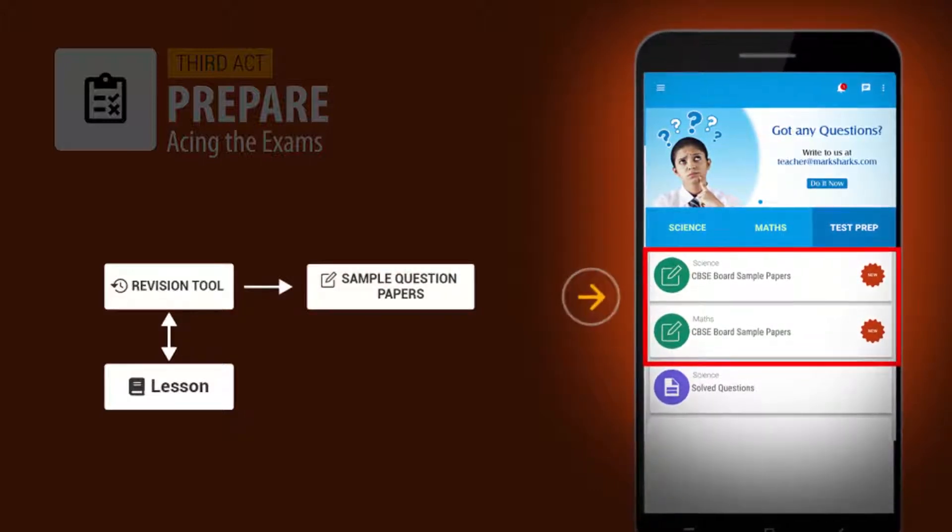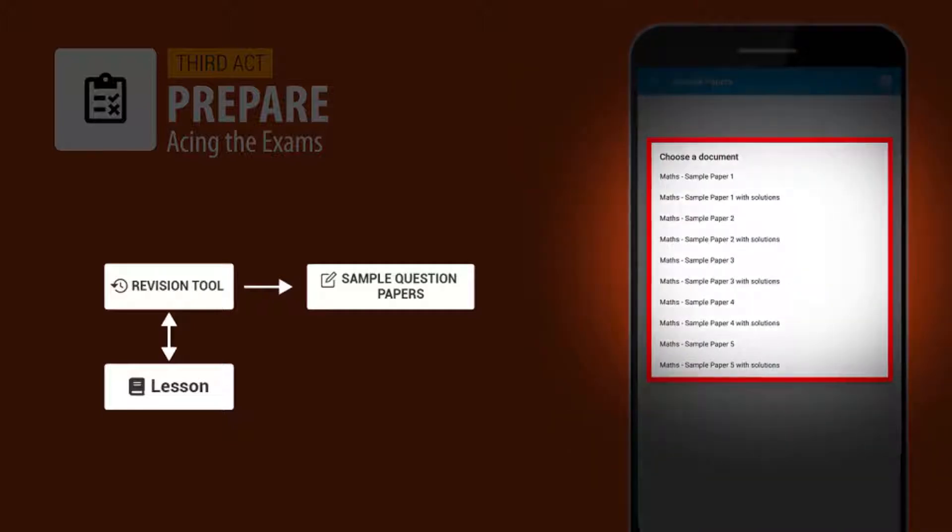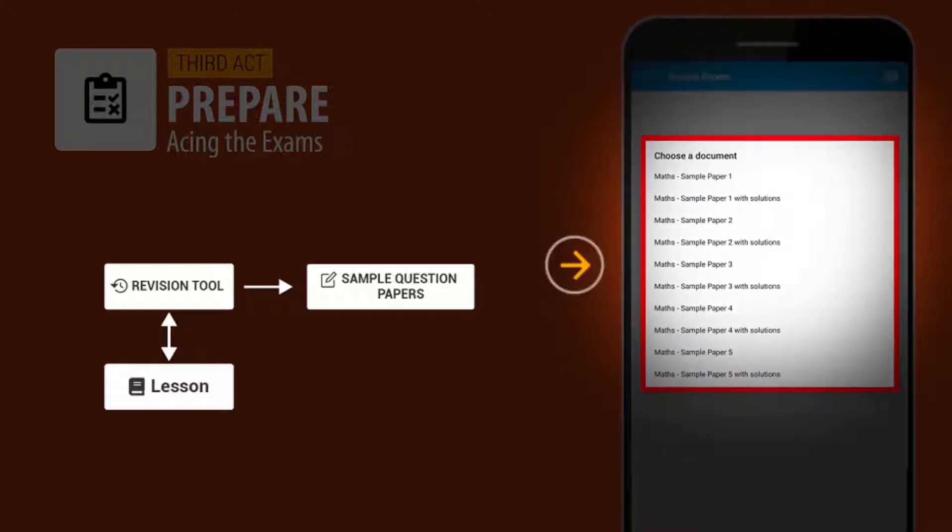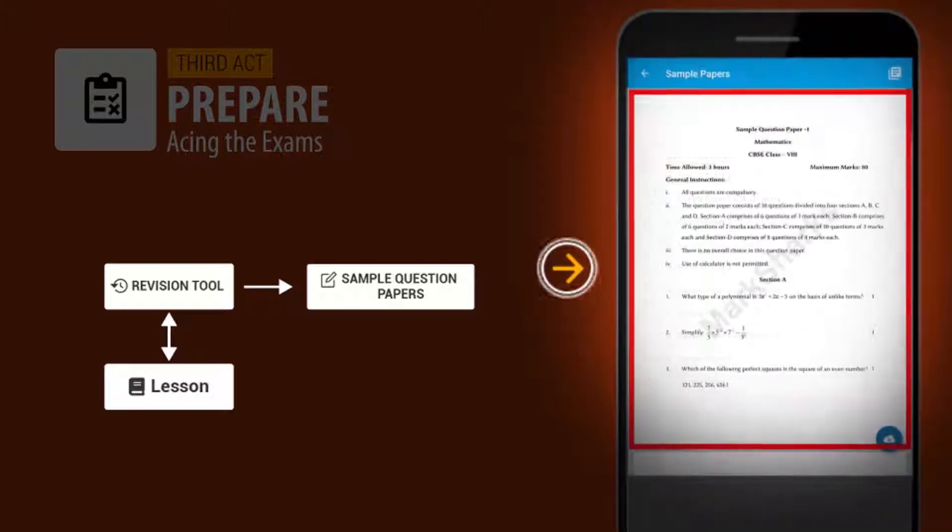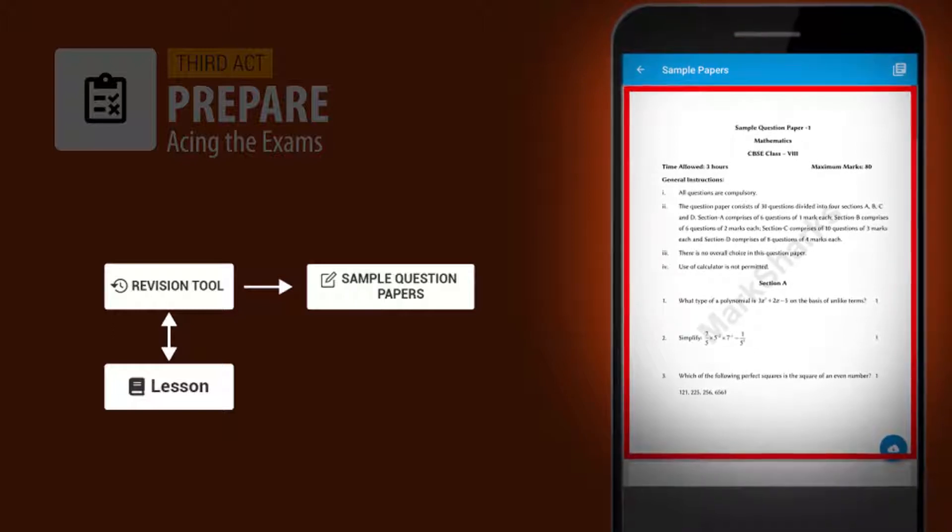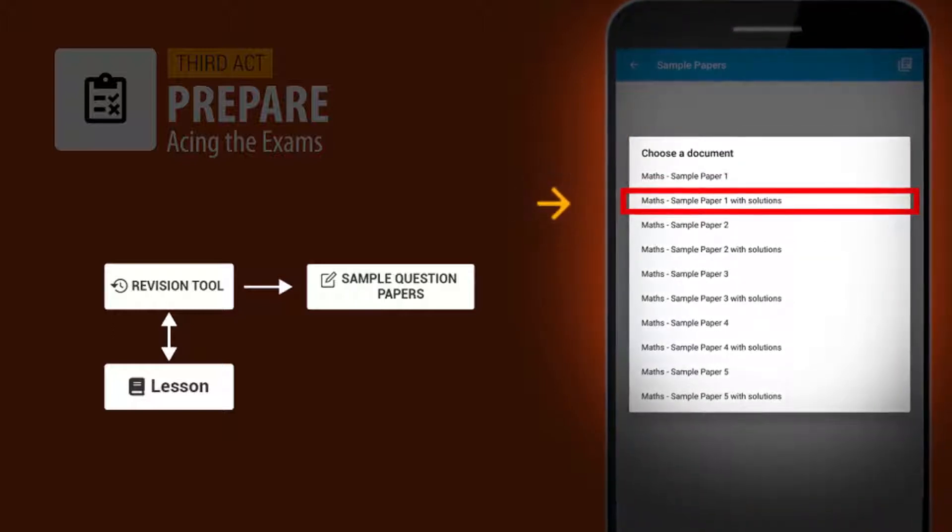These question papers are based on the CBSE pattern and they will give you practice of all the questions that you can expect in the final exam paper. There are five of these; attempt all of them. Look at the question papers first. Try to answer them in a pen and paper format and then go back to the solutions of the sample question paper and see how well you did.